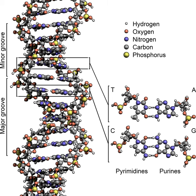A gene is a sequence of DNA that contains genetic information and can influence the phenotype of an organism. Within a gene, the sequence of bases along a DNA strand defines a messenger RNA sequence which then defines a protein sequence. The relationship between the nucleotide sequences of genes and the amino acid sequences of proteins is determined by the rules of translation, known collectively as the genetic code. The genetic code consists of three-letter words called codons formed from a sequence of three nucleotides, for example, ACT, CAG, or TTT.